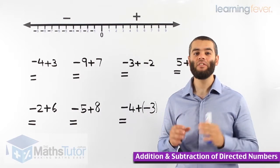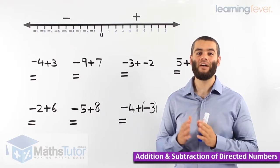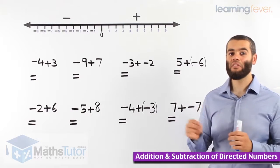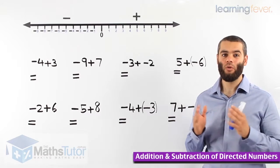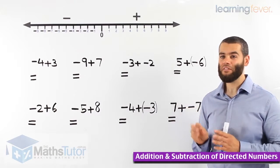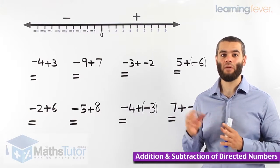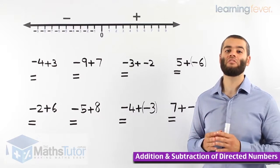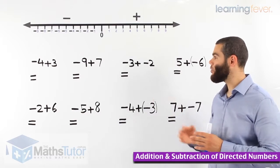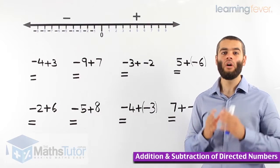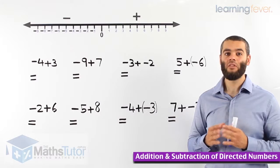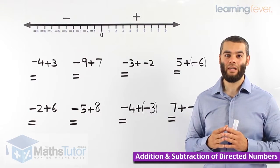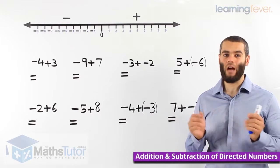Hey guys. In a previous lesson we learnt about the number line extended after zero and introduced what we call negative numbers. Now we're going to use the number line to learn how to add and subtract directed or negative numbers. At the start you're going to use the number line, but after you get the hang of it you won't need it at all. I always tell my students — even if it takes you 30 to 40 questions using the number line, there's nothing wrong with it. Use it, and after you get the hang of it you won't need it again.